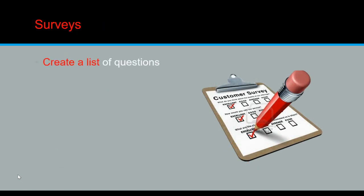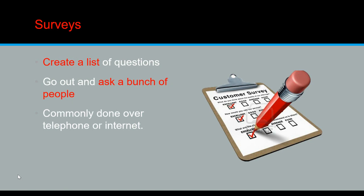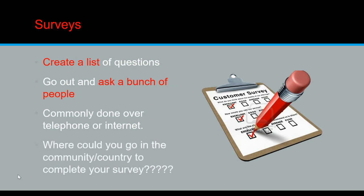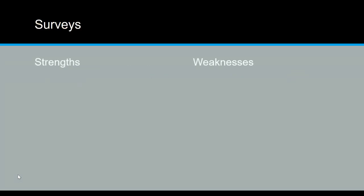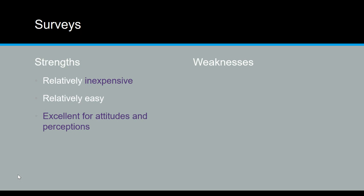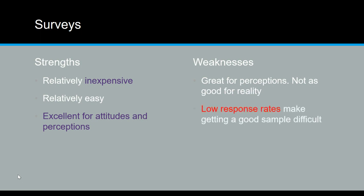A survey is something you've answered all the time — like the Viking Views survey questions, for example. It's just a list of questions that you ask a bunch of people, often through the internet or on the phone, or you can go out in your community. Strengths: it is pretty inexpensive and easy to do, and definitely helpful if you're just looking for opinions or attitudes. Weaknesses: it is more about perceptions rather than reality, it can have low response rates, and the order of the questions does make a difference — we'll talk about that as we continue through these topics.